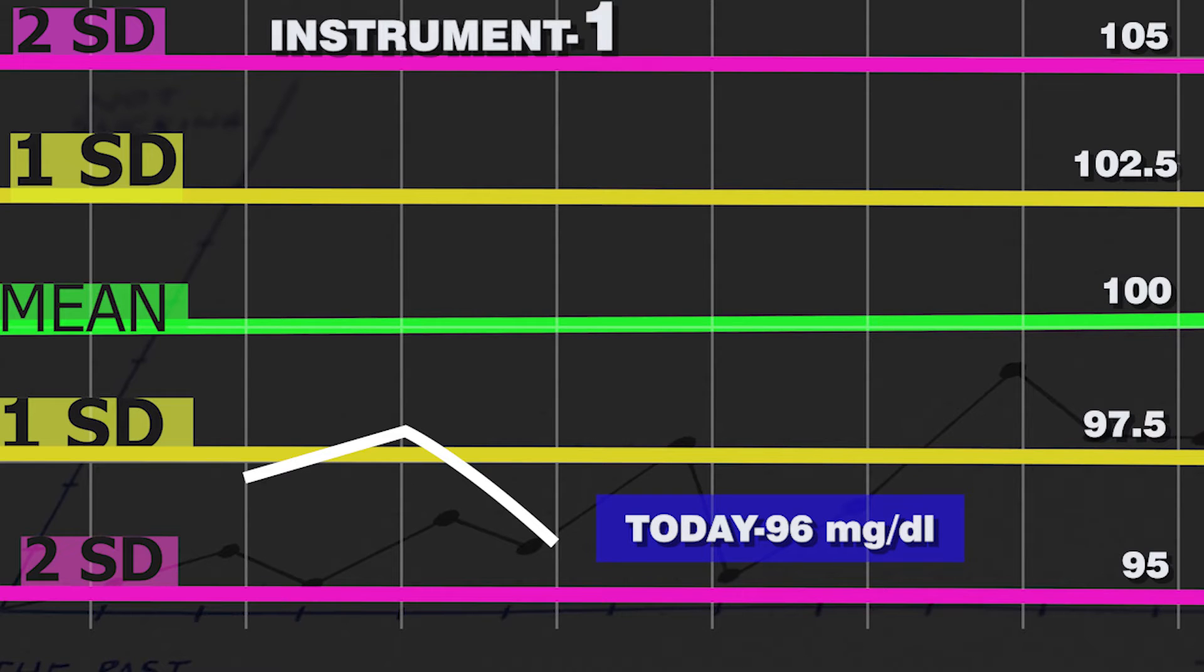We may think that we are running the QC at regular intervals and all our instruments are within 2 SD value. Then why should we do this correlation? Here is the example.